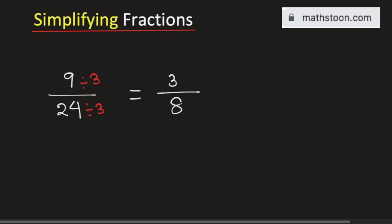Now there is no number which can divide both 3 and 8 other than 1, so we cannot simplify this fraction further. Therefore, 3 by 8 is the simplified reduced form of the fraction 9 divided by 24, and this is our final answer.